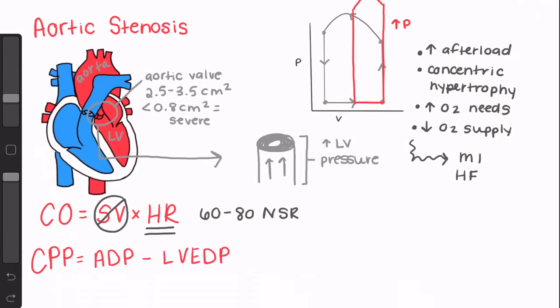which is equal to aortic diastolic pressure minus left ventricular end diastolic pressure. As I said earlier, patients with aortic stenosis have an increased left ventricular end diastolic pressure. This means that if we allow the patient to become hypotensive, which would equate to a decreased aortic diastolic pressure, even for a short amount of time,